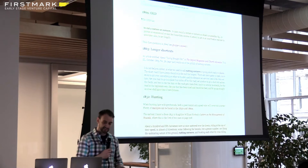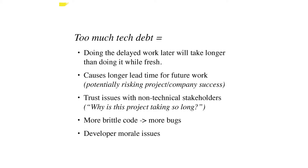So what happens when you have too much technical debt? Doing the delayed work later is going to cause more work, which causes longer lead time for future work, which gets you in trouble with management because they don't understand. It leads to more brittle code, more bugs, and potentially even developers who are unhappy because the thing they really want to build is the product, and yet they're being pulled off on a tangent to build something else.